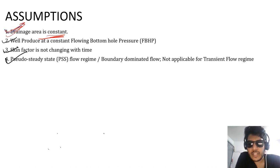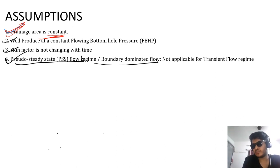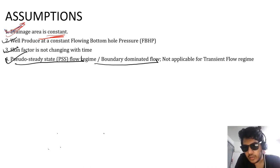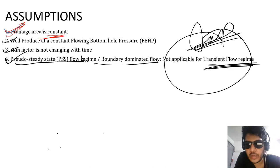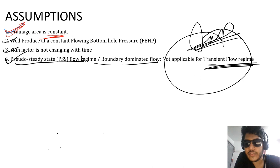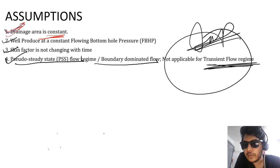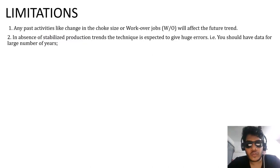Pseudo-steady state flow regime has been followed — also called boundary-dominated flow. It has been assumed that the well will be flowing under these regimes. This is a very important point: it is not applicable for a transient flow regime. If wells are flowing in transient flow regime, there are certain type curves that can be used to determine the decline rate or estimate the EUR.